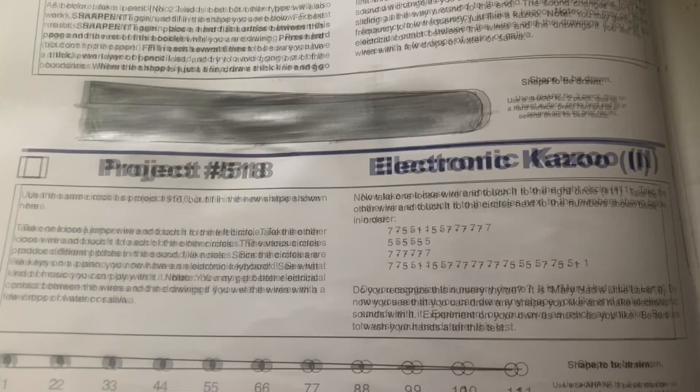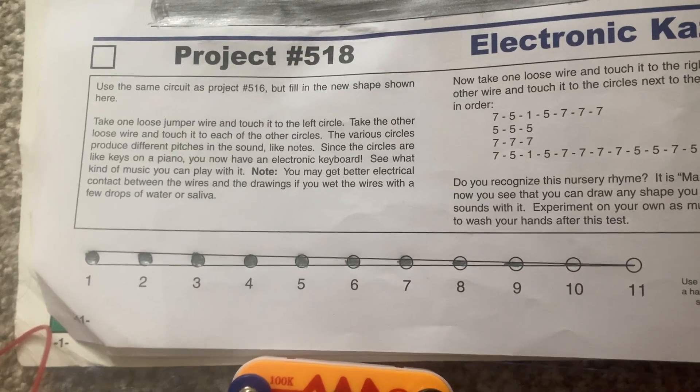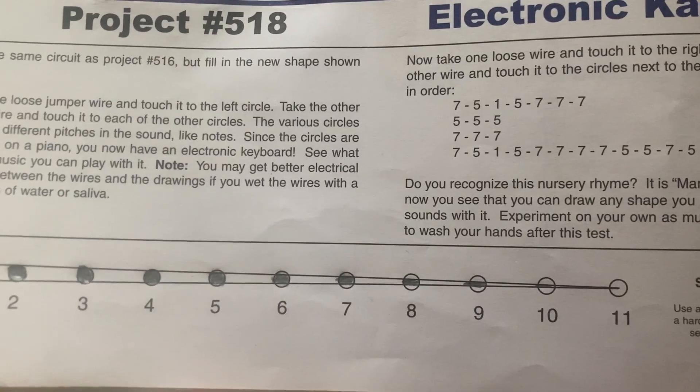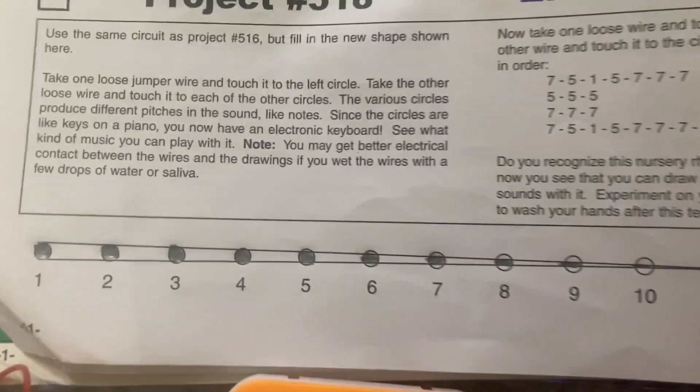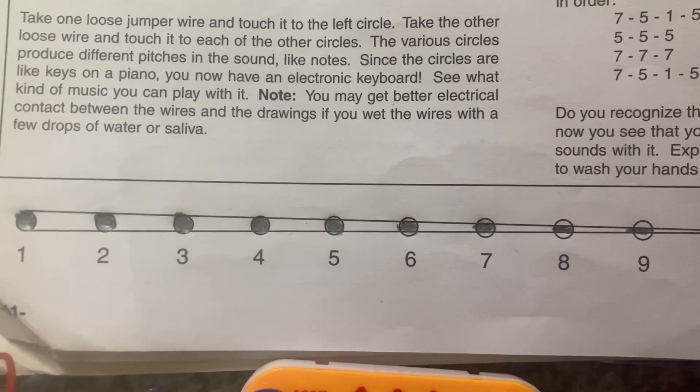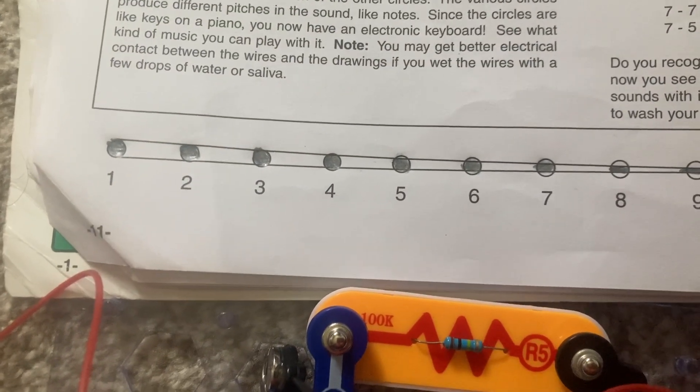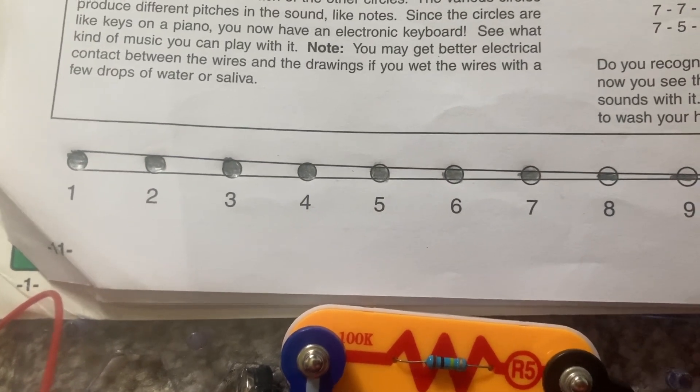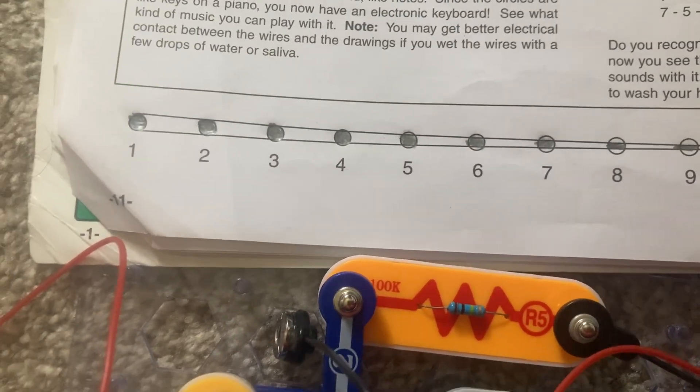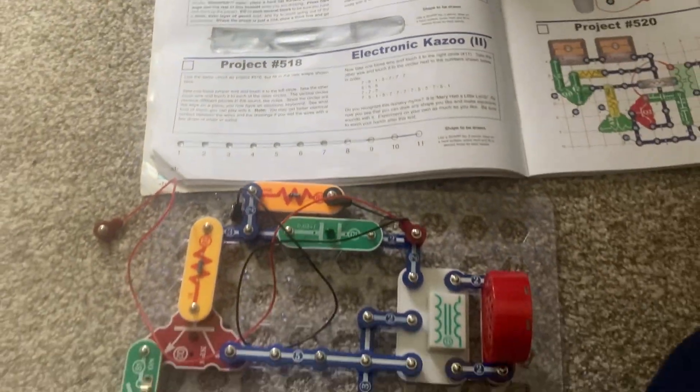It'll be just like how a kazoo works. And now for the variant of this project, you would fill in these circles. And I didn't fill all of them, but I think I just filled in parts of the circles between the lines. But you would place the end of one jumper wire against the left circle and then take the other loose wire and touch other circles with it. And you'll hear different notes like an electronic keyboard. And you can actually play nursery rhymes, including this one, which is Mary had a little lamb. That's pretty interesting.